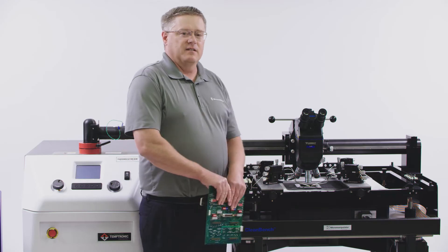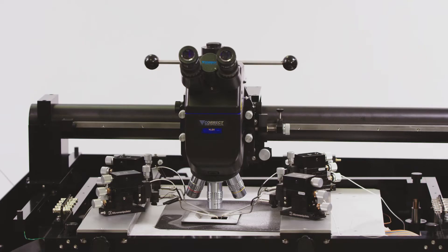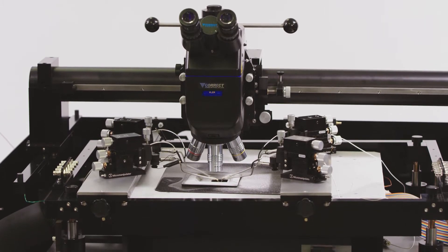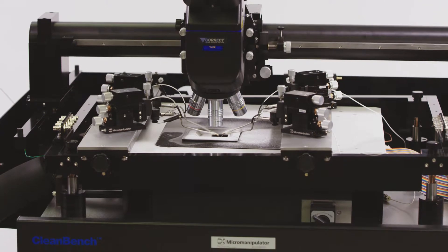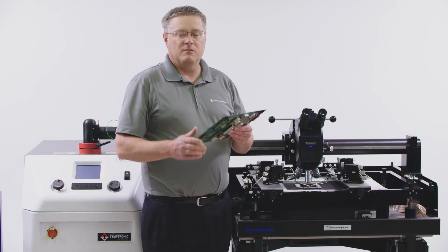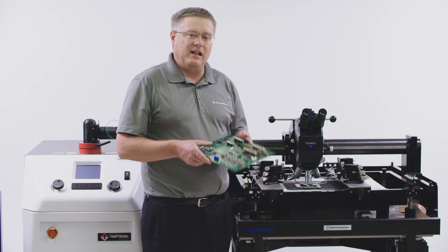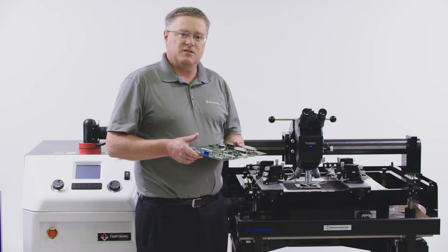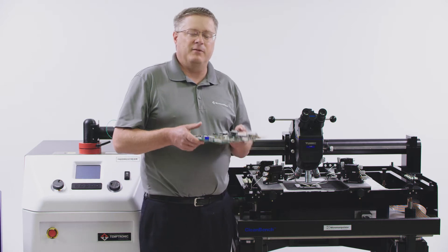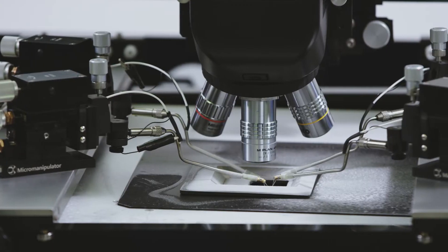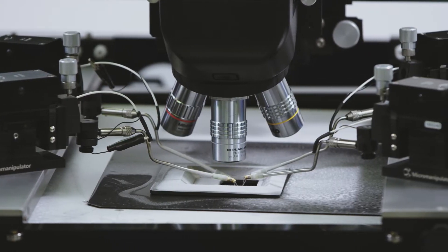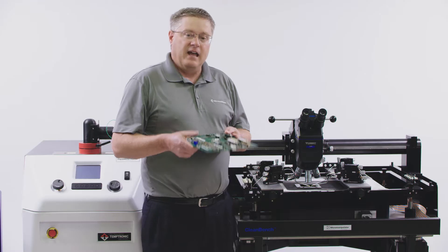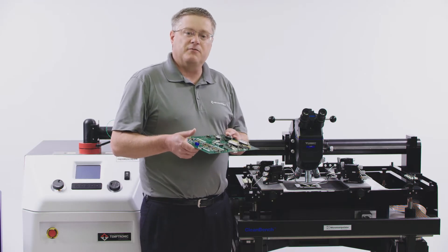You can now test board mounted devices at temperature with the Versa system. This Versa is configured for temperature testing for minus 40C to 125C of board mounted devices. Whether your devices are mounted onto an application board, development board, whatever it is that you're mounting your boards to to exercise them for your FA, your product development, your product test needs.